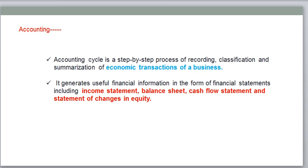After recording, we need to classify. In the journal there is no segregation at all — all the transactions will be there. But classification means using a ledger. We need to classify according to the account: expense account, sales account, drama account, Krishna account, missionary account, rent account, salary account — like that we need to classify. That is called a ledger.